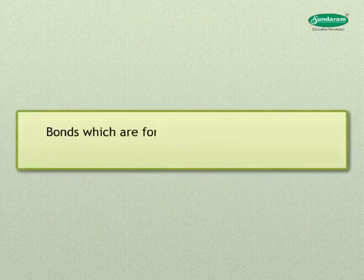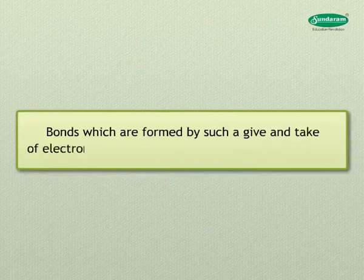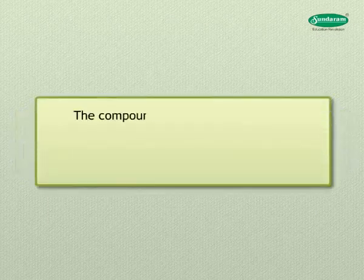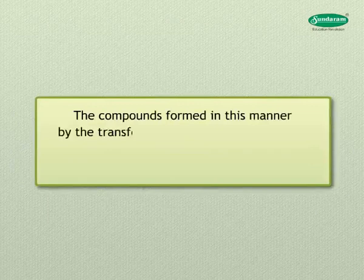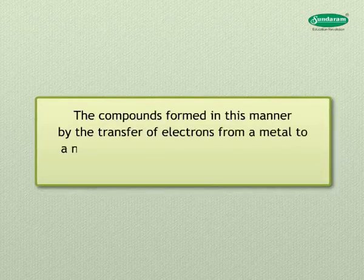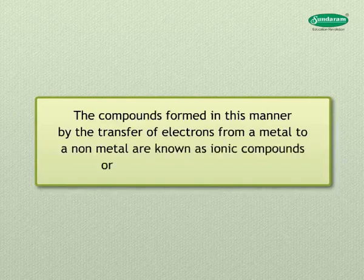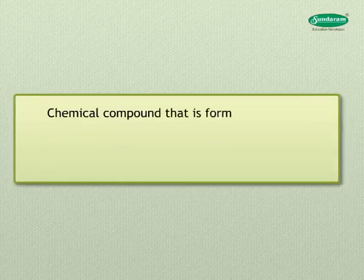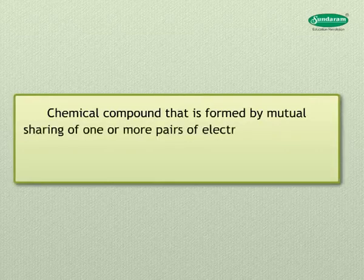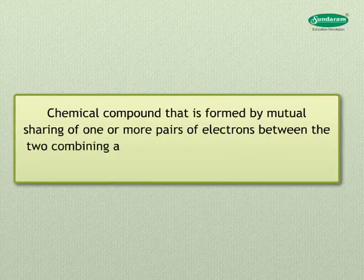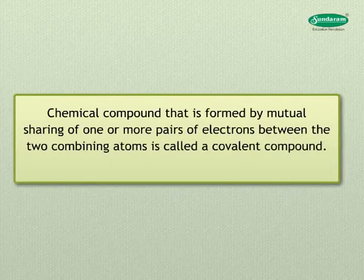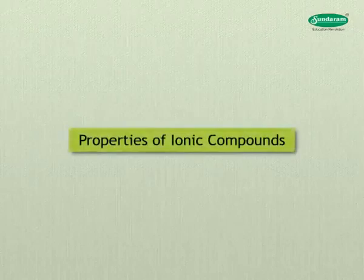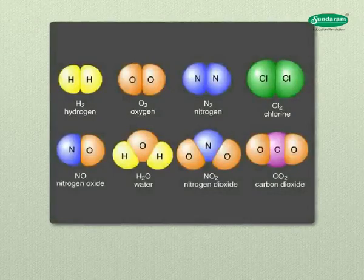Sodium chloride exists as aggregates of oppositely charged ions in a definite geometrical shape. Bonds formed by this transfer of electrons are called ionic or electrovalent bonds. Compounds formed by the transfer of electrons from a metal to a non-metal are known as ionic or electrovalent compounds. In contrast, a covalent compound is formed by mutual sharing of one or more pairs of electrons between two atoms — examples include water and HCl.